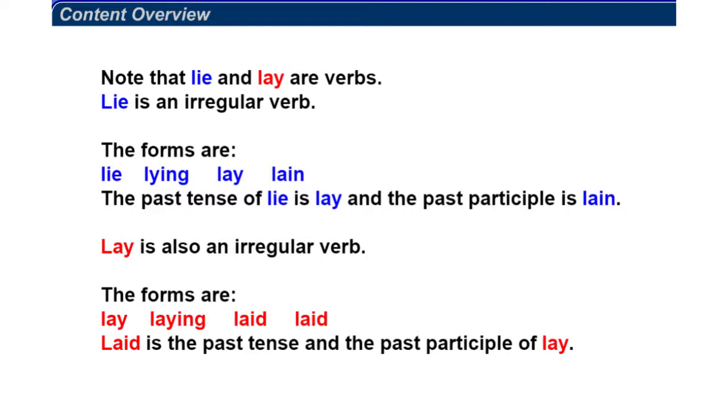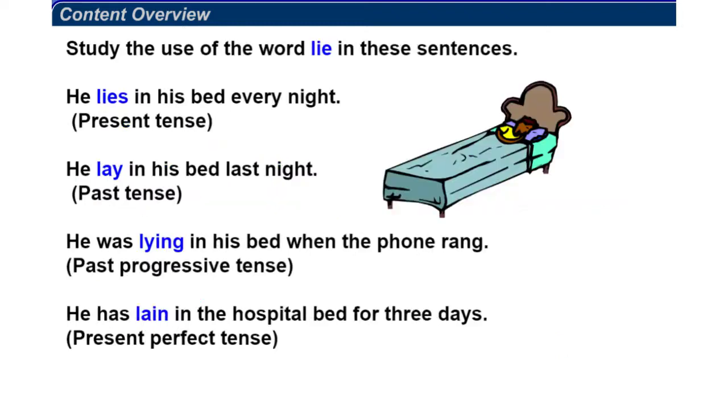Let's study the use of the word lie in these sentences. He lies in his bed every night - that's present tense. He lay in his bed last night - that's past tense. He was lying in his bed when the phone rang - that's past progressive tense.